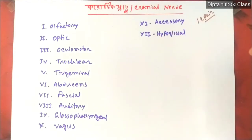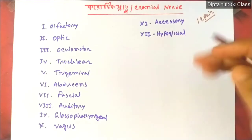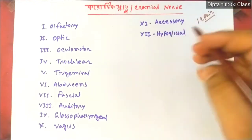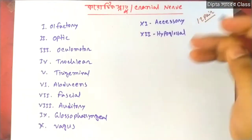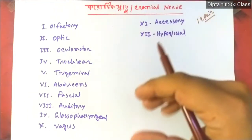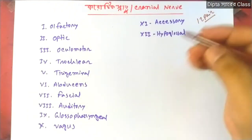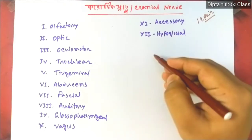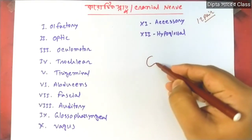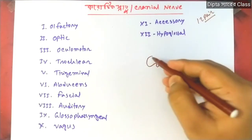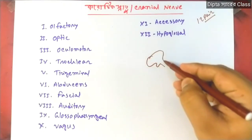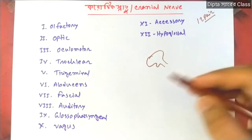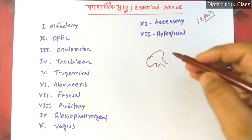There is a concept here. I am going to tell you about the classifications. In the first class, we have taken three of them — covering the relationship between the names of these nerves.